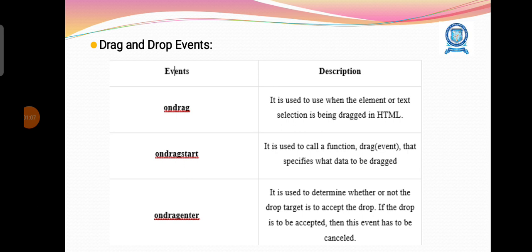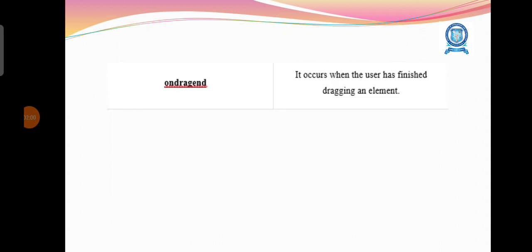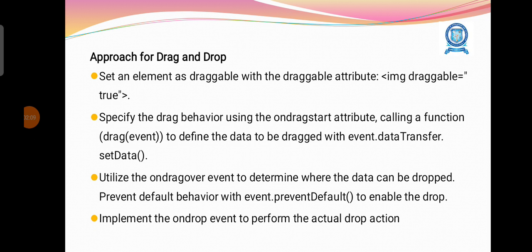The drag and drop events are: ondrag, used when the element or text selection is being tracked; ondragstart, which calls a function to specify what data to be tracked; ondragenter, used to determine whether the drop target is to accept the drop — if accepted, this event must be cancelled; ondragleave, which occurs when the mouse leaves an element before a valid drop target; ondragover, which specifies where the drag data can be dropped; ondrop, which specifies where the drop has occurred at the end of the drag operation; and ondragend, which occurs when the user has finished dragging an element.